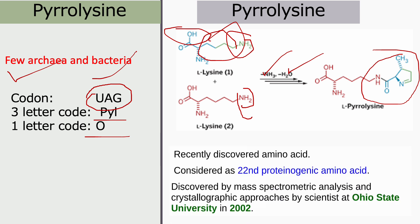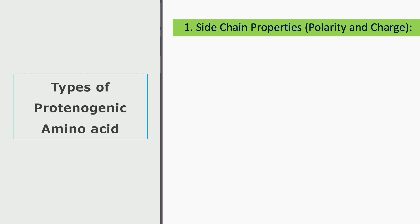Pyrrolysine was discovered and is considered the latest proteinogenic amino acid. Next, I will discuss different types of proteinogenic amino acids.